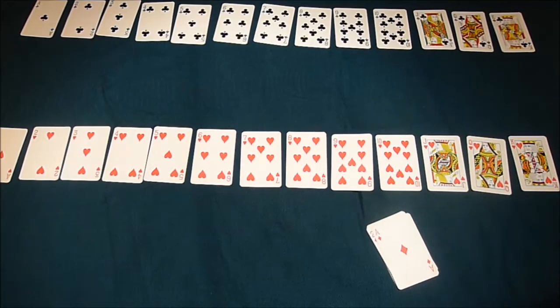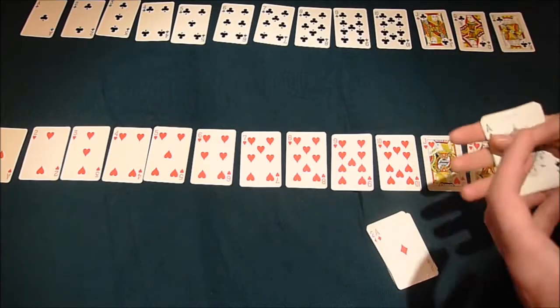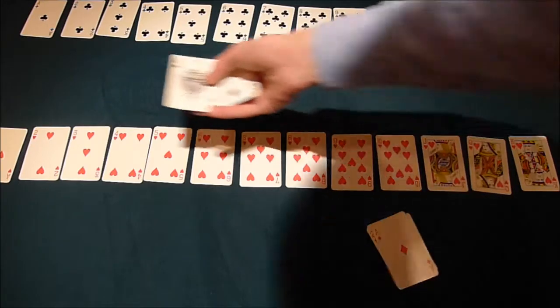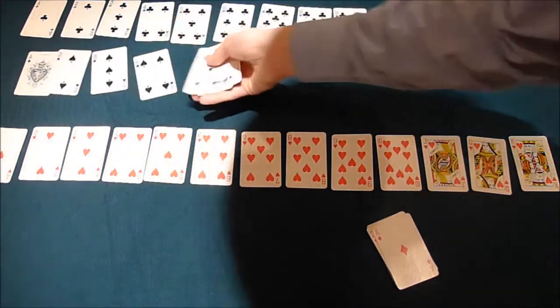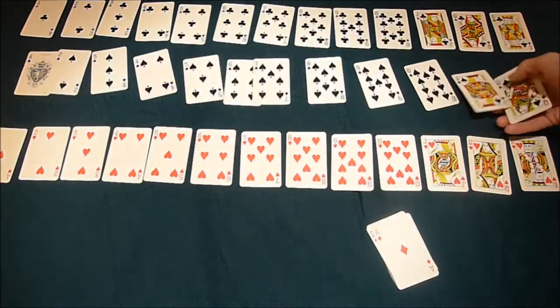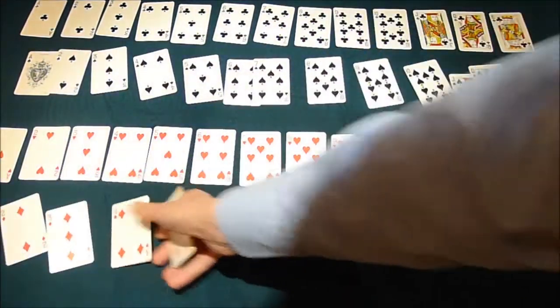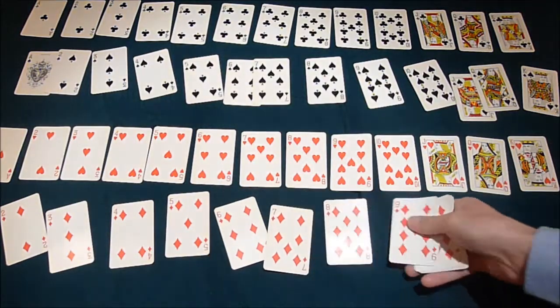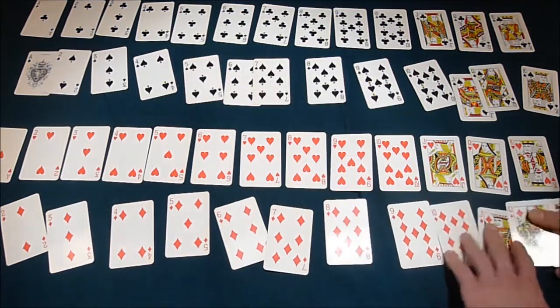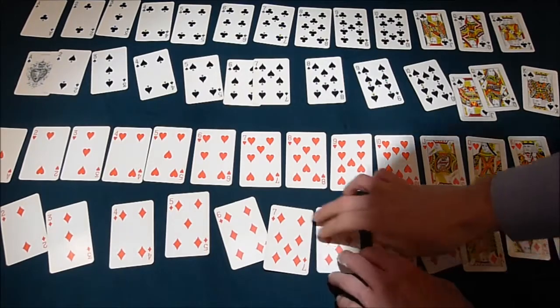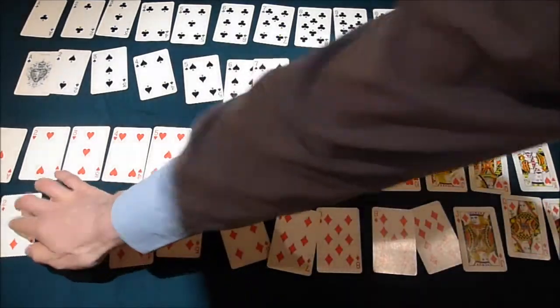Now during interphase, where the cell's just doing its thing, it's also making another set of each chromosome. We can use these cards to demonstrate that we've got another black chromosome and another red chromosome as well. We've got four chromosomes now and we're ready to split by meiosis to make some sex cells, to make some gametes.